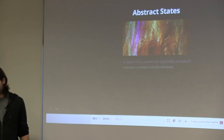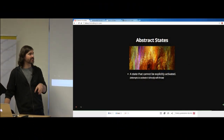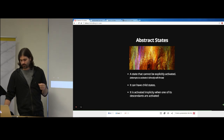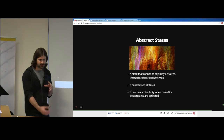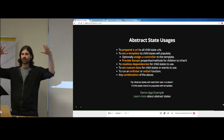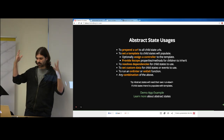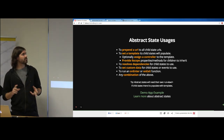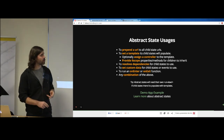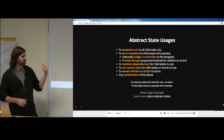Abstract states — I won't go too deep since it's an advanced topic. Basically, it's a state that cannot be explicitly activated — saying go to it will throw an error. But it can have children and becomes active implicitly when any of its descendants are activated. It's a great place to do common work as an umbrella for all children: prepend a URL to all children, set a template they all populate into, assign a controller, provide scope properties, resolve dependencies, set custom data, or do an action on enter or exit.